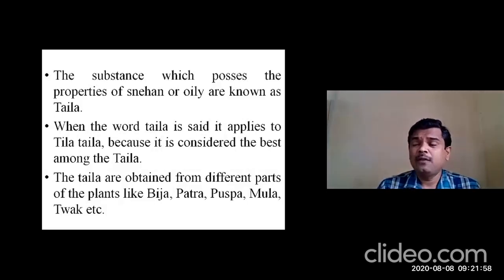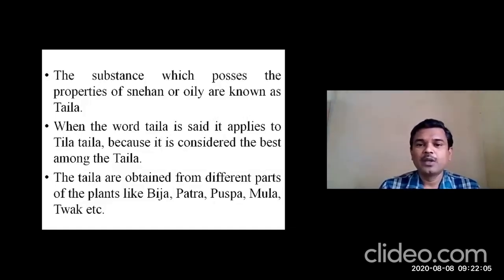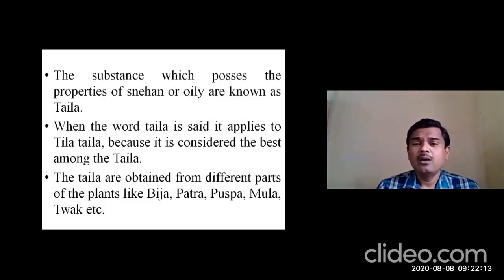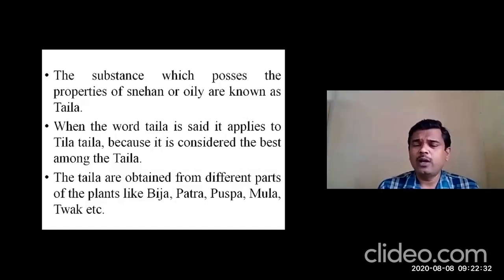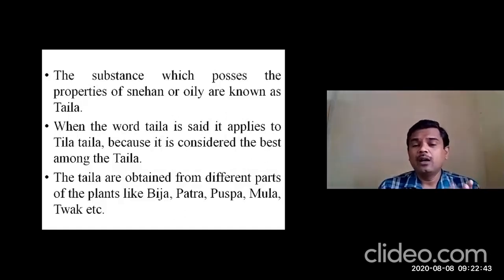Acharya Charaka mentioned two types of Thaila yonis: Udbidha yoni and Jangama yoni. Udbidha yoni refers to plant sources — bija, patra, pushpa, mula, thwak — obtained from parts of plants that grow by piercing the earth. The Jangama yoni includes the four Chaturvita Snehas: Gruta, Thaila, Vasa, and Majja. Among them, Thaila is the only one from Udbidha yoni; the remaining — Gruta, Vasa, and Majja — are from Jangama yoni.